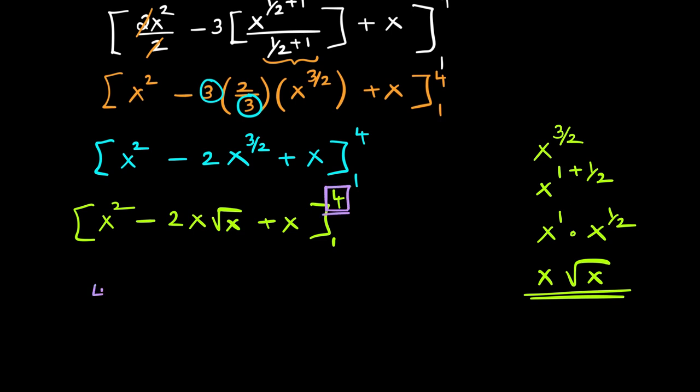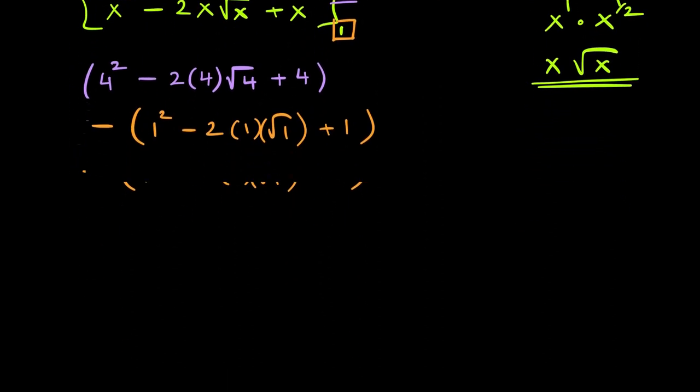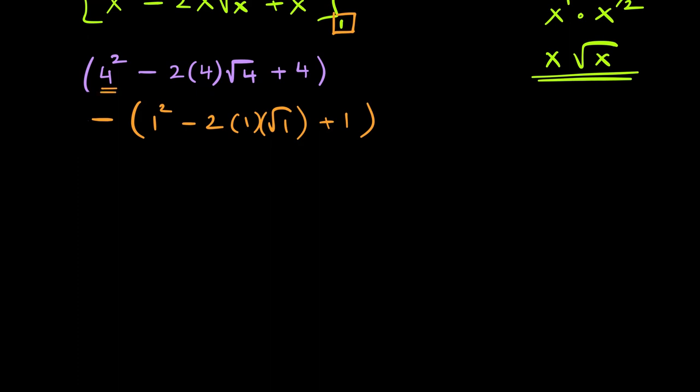Let's plug in the upper limit first. That is the rule 4 square minus 2 into 4 into root 4 plus 4. Now it's time to plug in the lower limit which is 1 minus sign 1 square minus 2 into 1 into root 1 plus 1 and now we will evaluate it further. So from the first expression we have 16 minus 2 into 4 into 2 that becomes 16 again plus 4 and from the other bracket this is 1 minus 2 plus 1. This simplifies to 0.